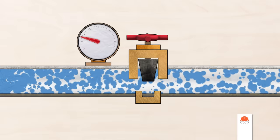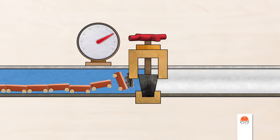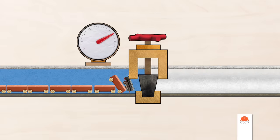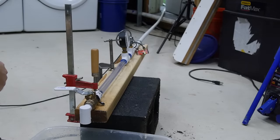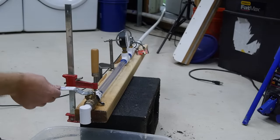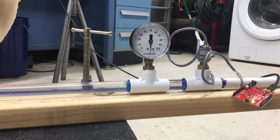If you didn't see my previous video about water hammer, here are the basics. Water is heavy and incompressible. If you suddenly stop water while it's moving through a pipe, it can create a massive spike in pressure and break stuff, like this pressure gauge.